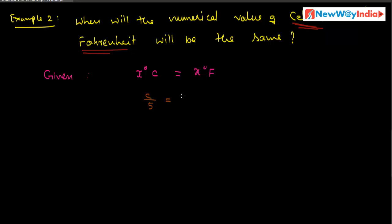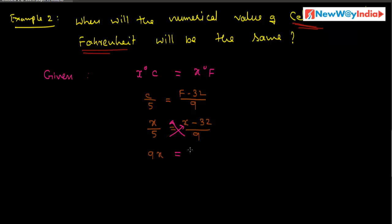Substituting: x divided by 5 is equal to x minus 32 divided by 9. Simplifying by cross-multiplication: 9x is equal to 5x minus 160. Transferring terms to the left side: 9x minus 5x is equal to minus 160. Therefore 4x is equal to minus 160.